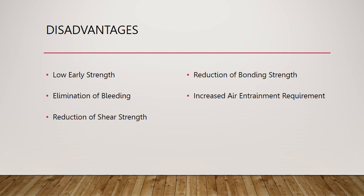Now for some of the disadvantages. The first disadvantage is low early strength. The addition of fly ash will dramatically decrease the early strength gains of a concrete mix, which becomes a major issue for situations such as low-temperature pours where high early strength is required. Another disadvantage is the elimination of bleeding. The inclusion of fly ash reduces the water demand, lowering the amount of water required, and all but eliminating the potential for bleeding. While this initially seems like an advantage, the lack of excess surface water will require faster finishing and more diligence in terms of preventing plastic shrinkage cracks.